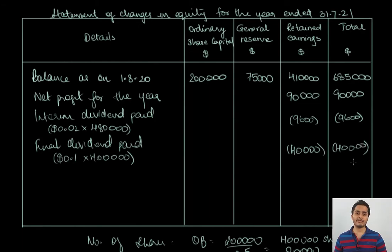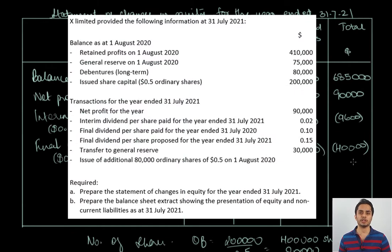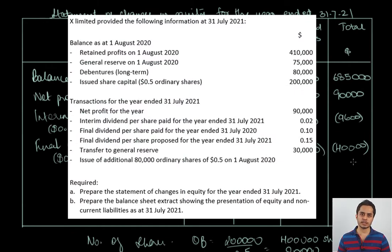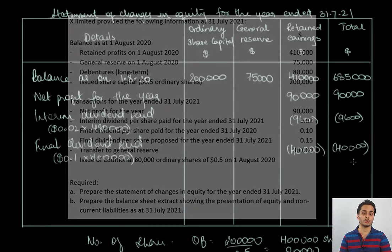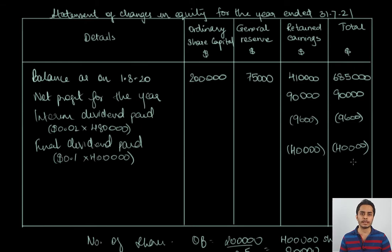Then we have the final dividend per share proposed for the current financial year at $0.15 per share. The proposed dividend is never recorded in any financial statement or accounting record, so this will be ignored. It will be recorded in the next year when the dividend is actually paid in cash.